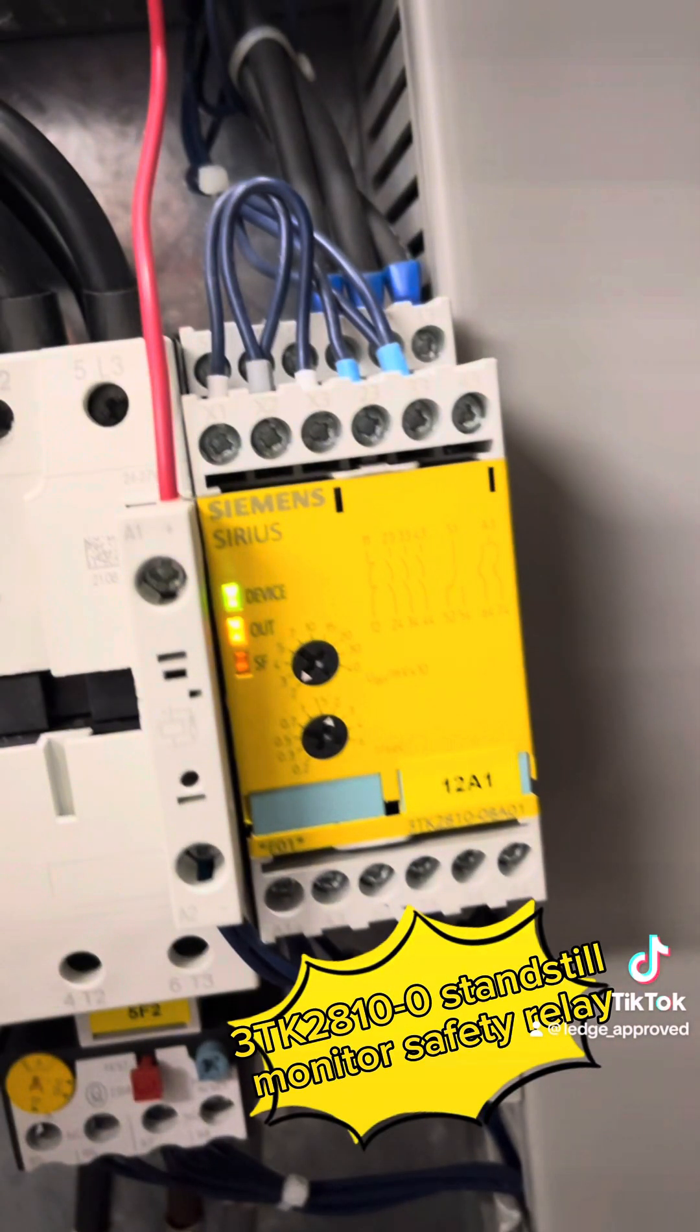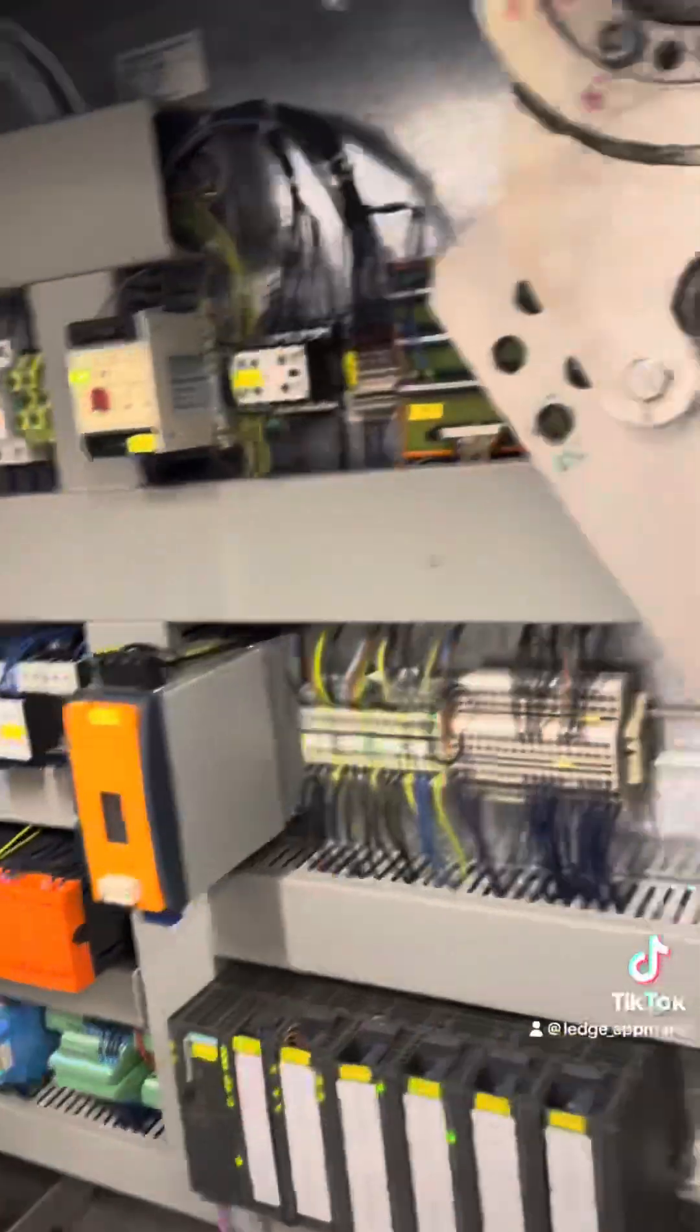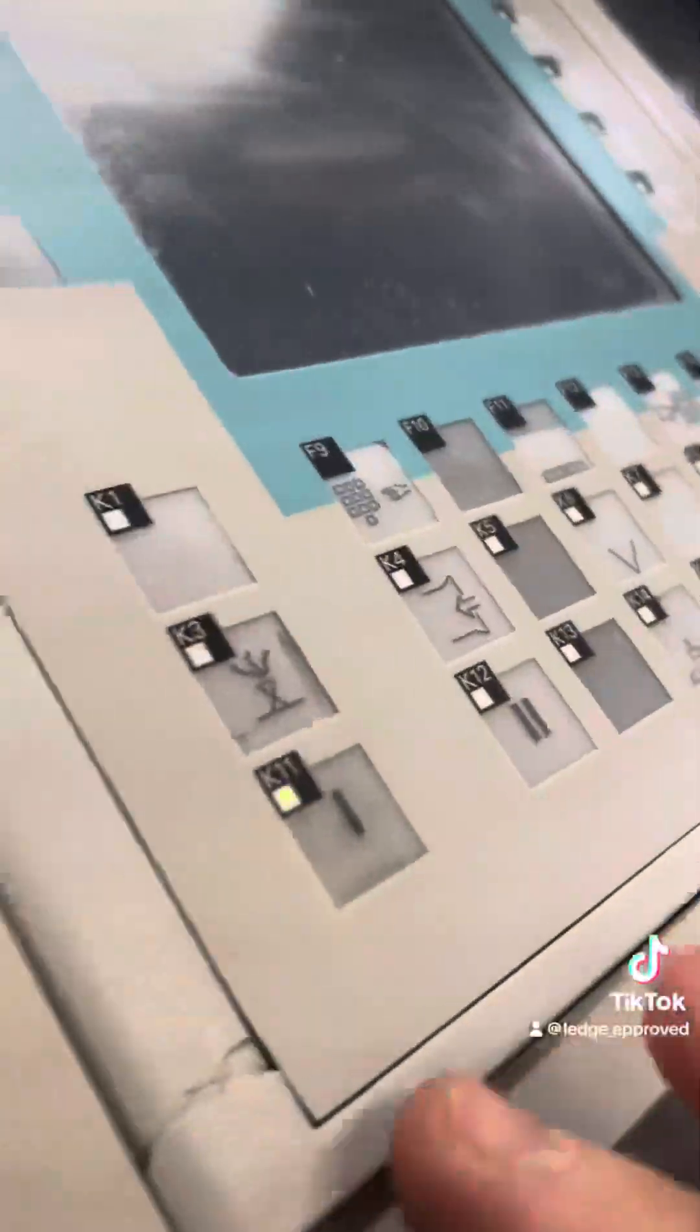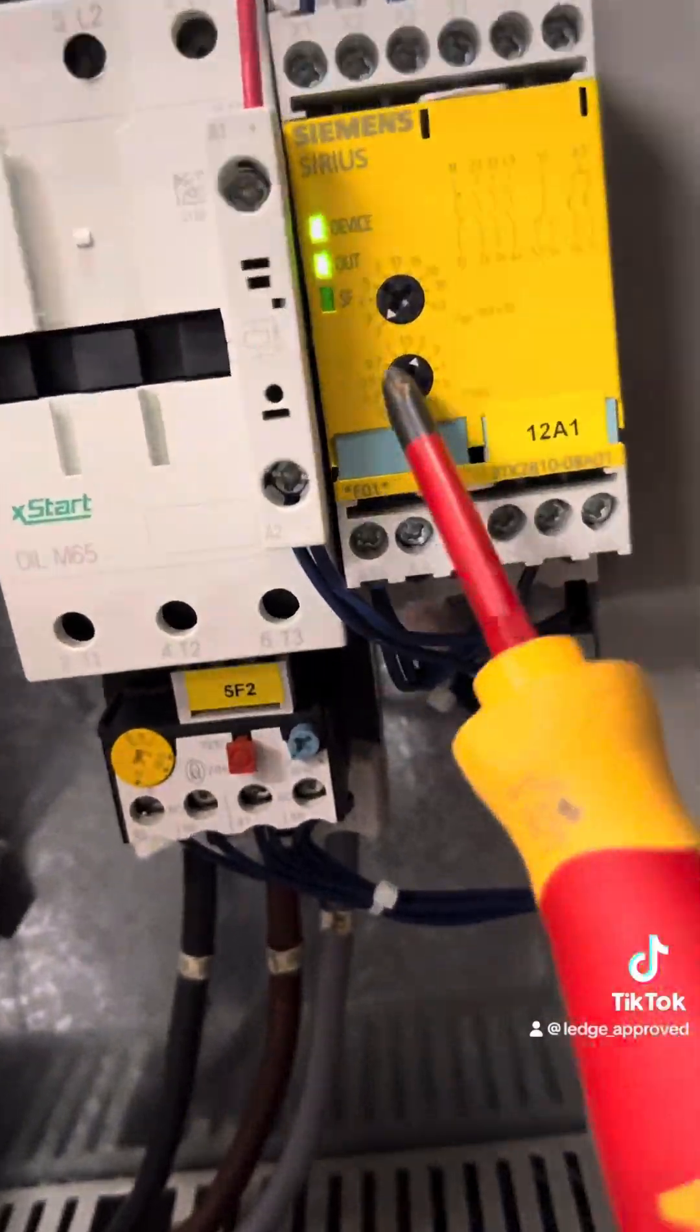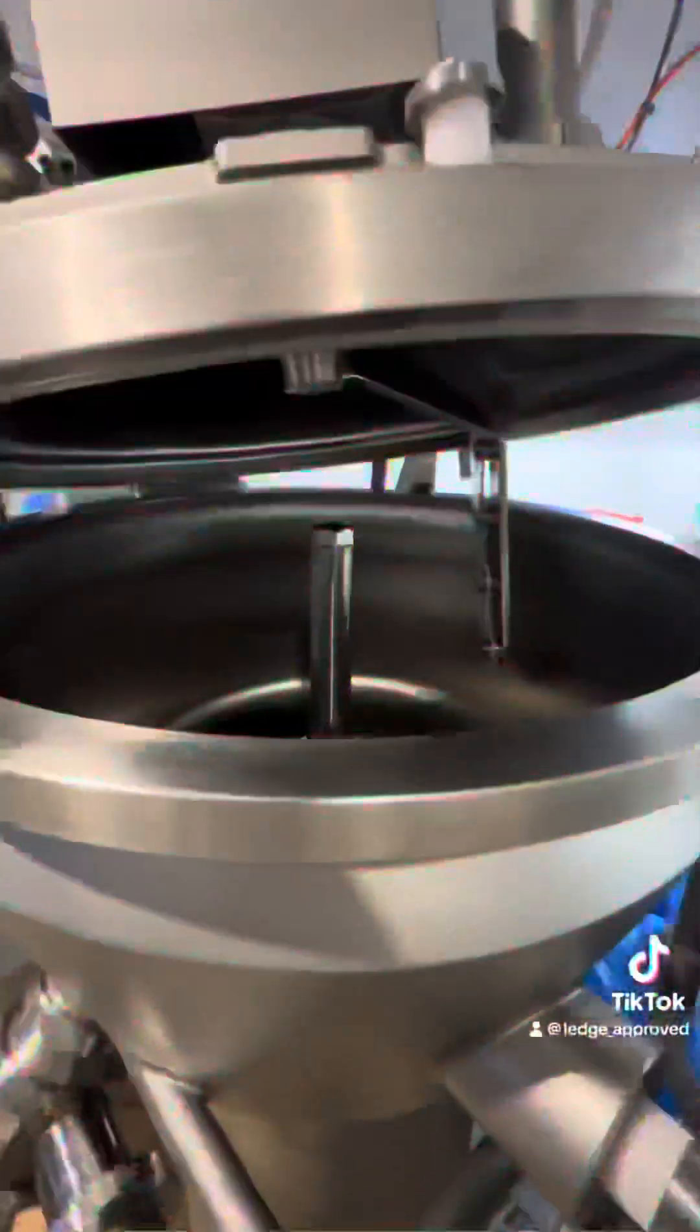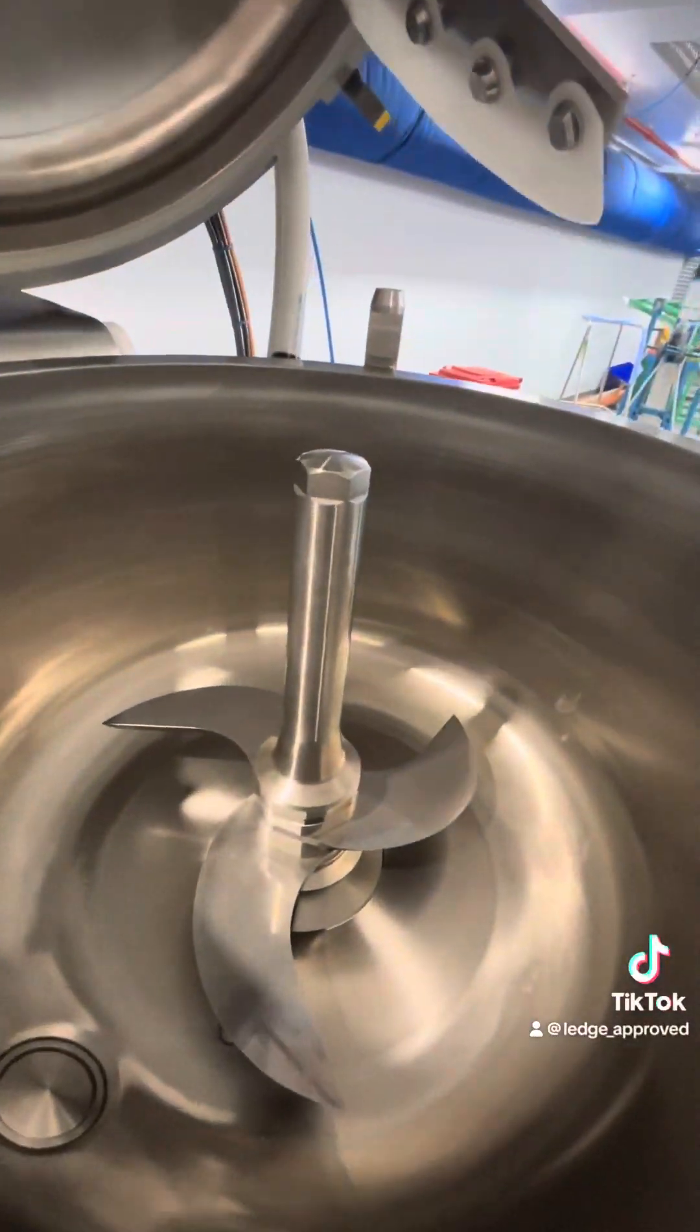What we got here is a standstill monitoring safety relay. This is monitoring a motor, making sure that you can't open the lid while it's still moving. How it's working is it's directly connected to the windings and it's checking for voltage. As you can see, it's orange when it's running, and then when that beast has stopped and it doesn't see no voltage no more,